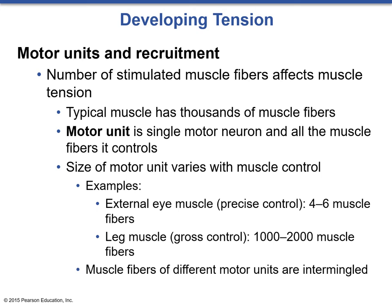Now revisiting how we communicate with muscle fibers: muscle fibers do not function alone. They are commanded by a motor neuron, and a single motor neuron communicates with multiple muscle fibers at the same time, creating what we call a motor unit. The size of the motor unit varies with muscle control. The external eye muscle requires very precise control, so a motor neuron might only innervate four to six muscle fibers. Whereas a leg muscle like the quadricep just needs gross muscle control, so one motor neuron can innervate 1,000 to 2,000 muscle fibers.